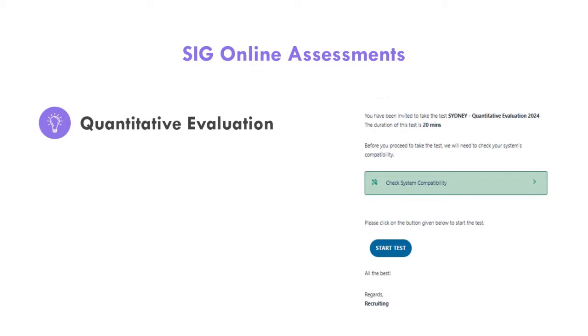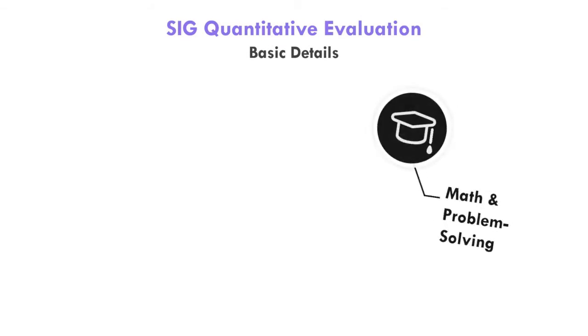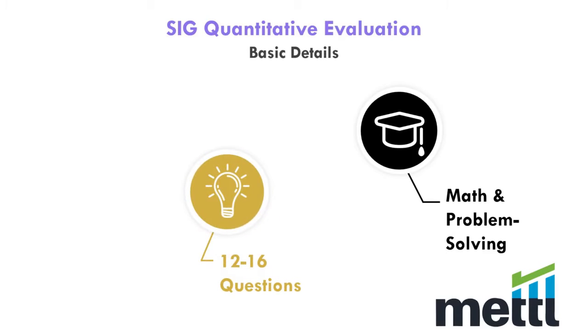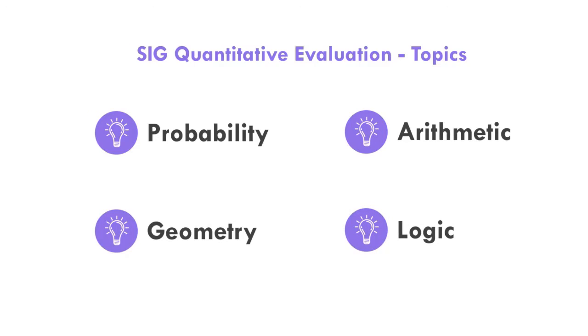The SIG Quantitative Evaluation is one of the three main tests used by SIG to screen candidates, alongside the Problem Solving Assessment and the Capital Markets Test. Note that each of these three tests is different, so make sure you watch the appropriate video for your test. The SIG Quantitative Evaluation is a short test assessing mathematical knowledge and problem-solving skills. The test, administered by test provider Metal, contains 12 to 16 questions to be solved within 20 minutes, covering four main areas.